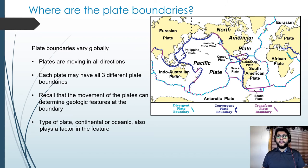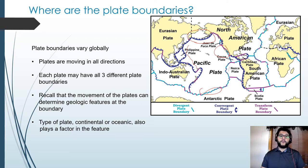One thing to understand is that one plate can and does have many different boundaries. If we look at the Pacific plate, at the top it has a couple of convergent boundaries that follow all the way down the left side. At the bottom, the southern portion, you get a mix of divergent and convergent plate boundaries. One of its most famous boundaries is off the coast of California — the San Andreas fault line, which is a transform boundary.